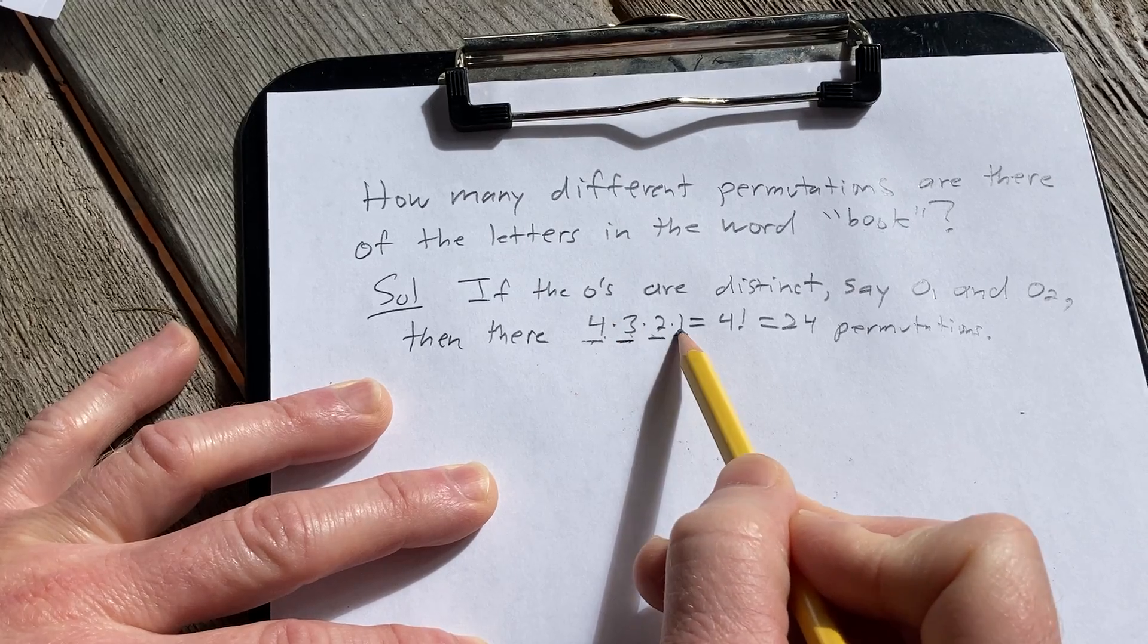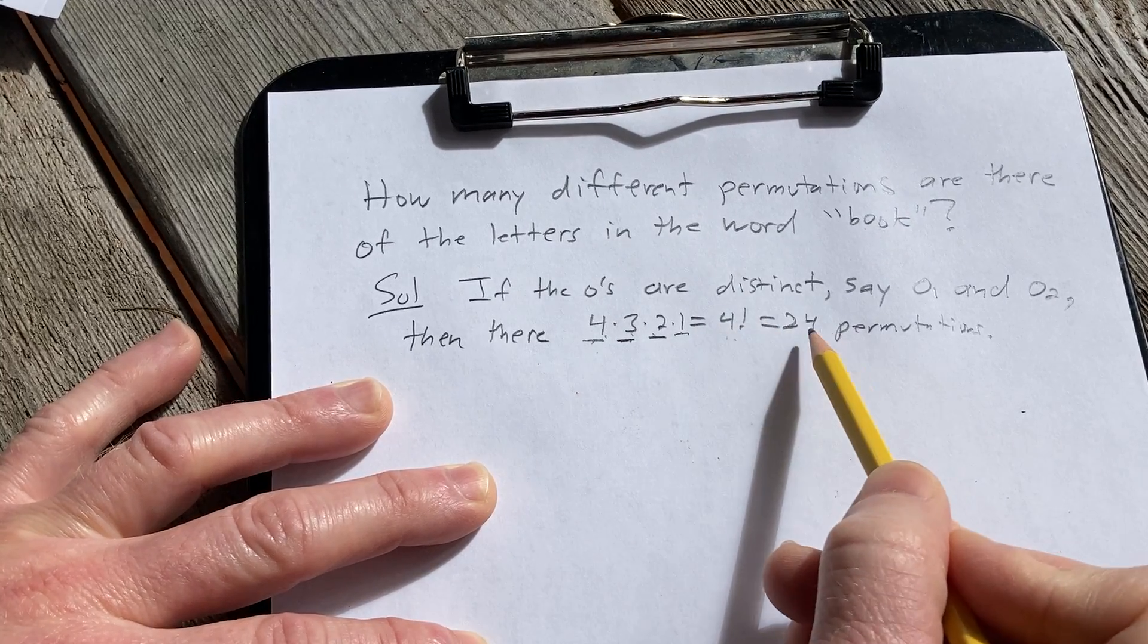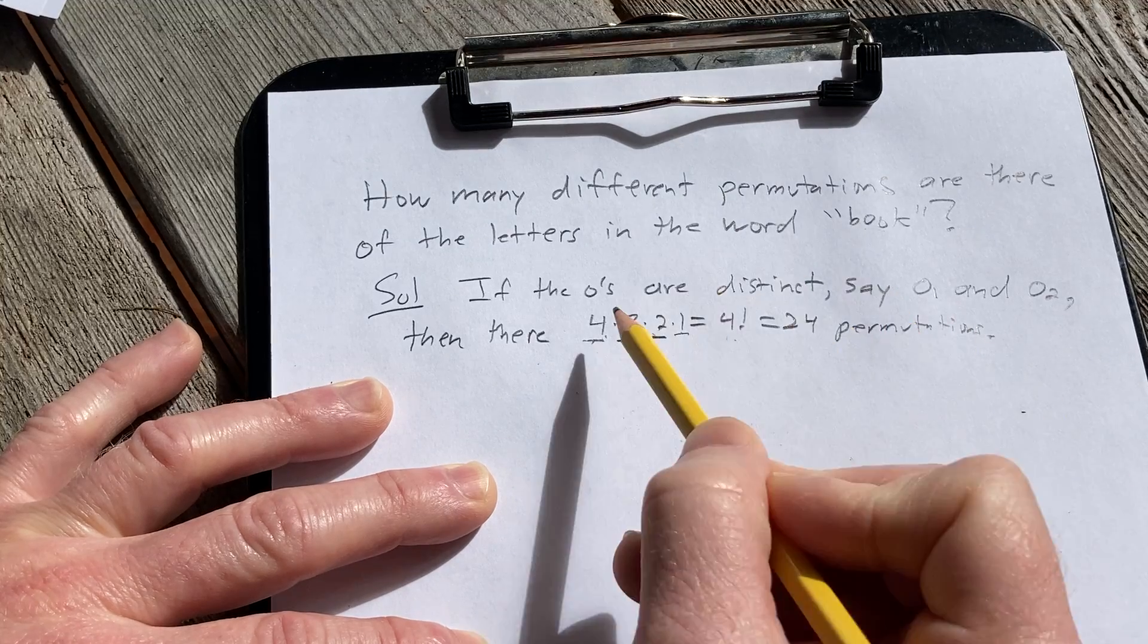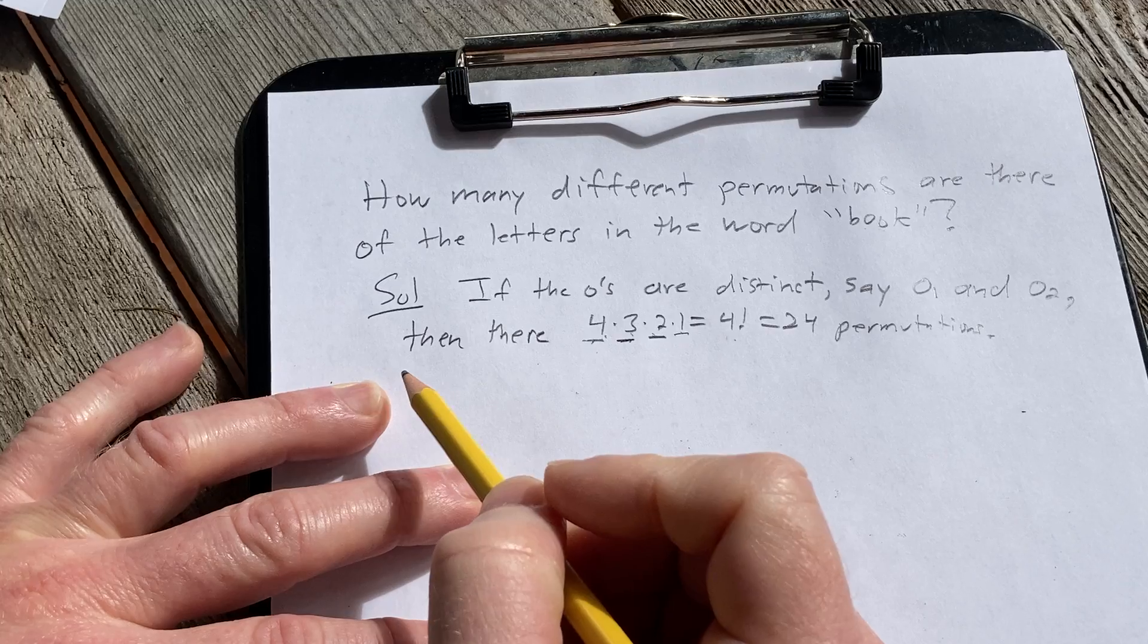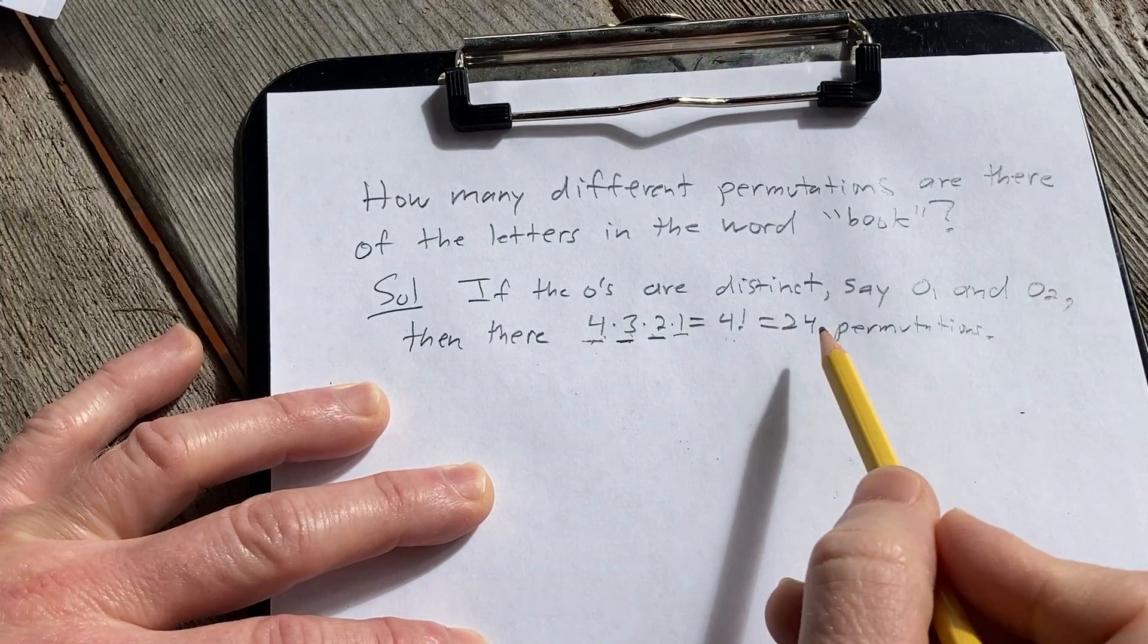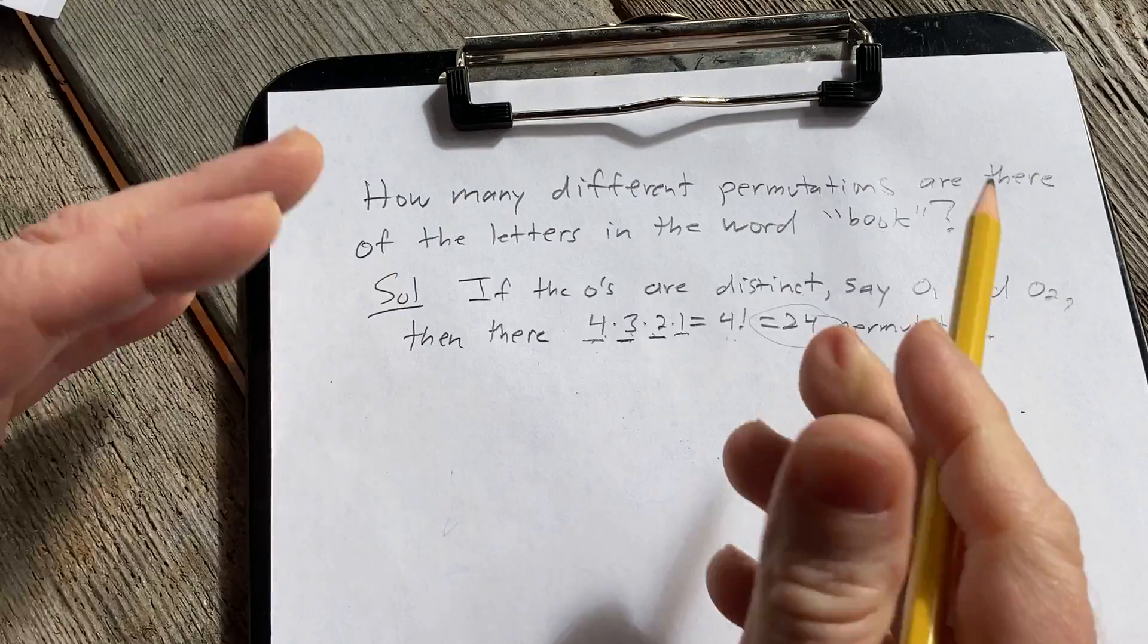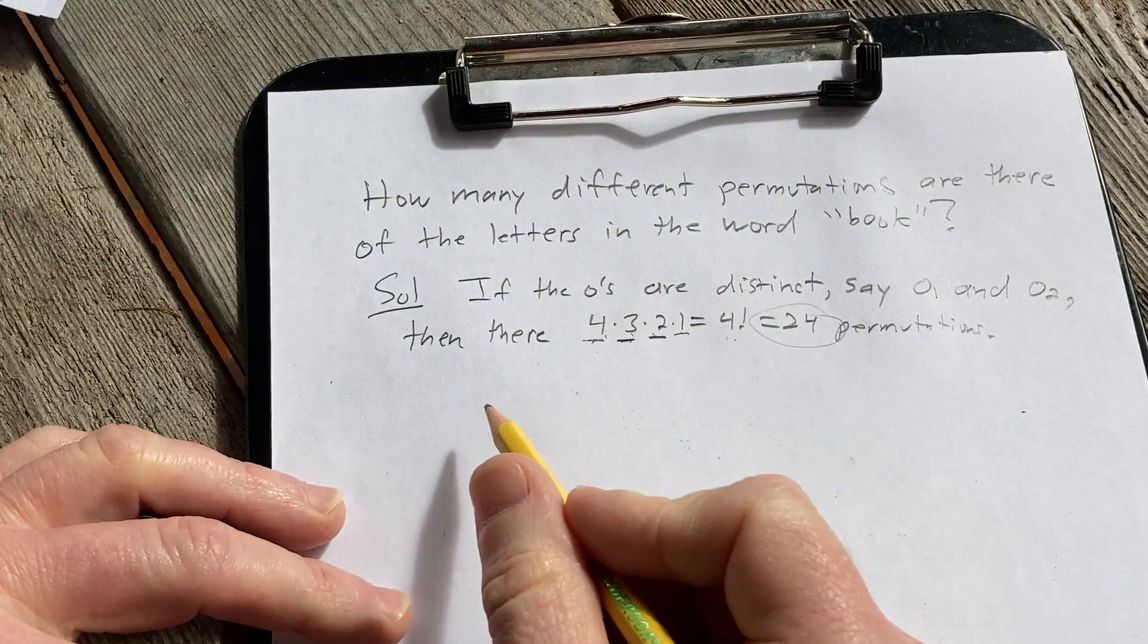would be 4 times 3 times 2 times 1, which is a special number which we denote by 4 factorial, which happens to be 24. So that's the number of ways to arrange four distinct objects. An arrangement, by the way, is called a permutation. So we have 24 different arrangements where the order matters of distinct objects, and that's called a permutation.